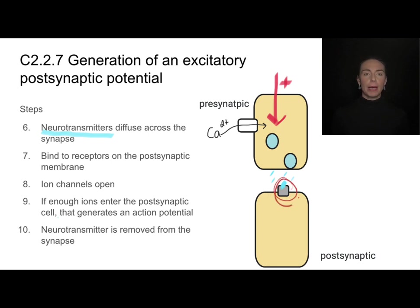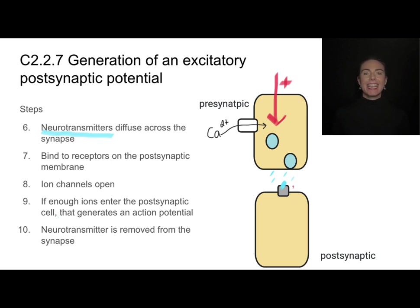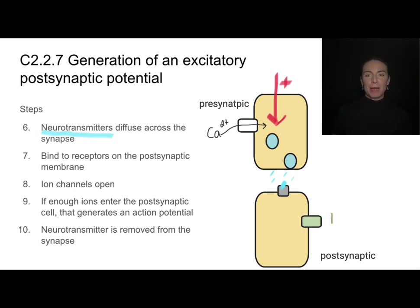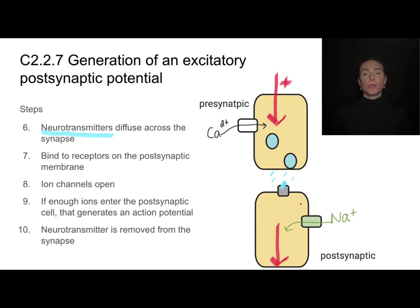When the neurotransmitter binds, it's going to cause ion channels to open. It depends on what exactly the post-synaptic cell is — whether it's another neuron or something else — but this receptor may also act as an ion channel. Once those voltage-gated sodium ion channels open, sodium can enter into the cell via facilitated diffusion, and now we've started a new action potential in the post-synaptic cell, initiated by the movement of those sodium ions.